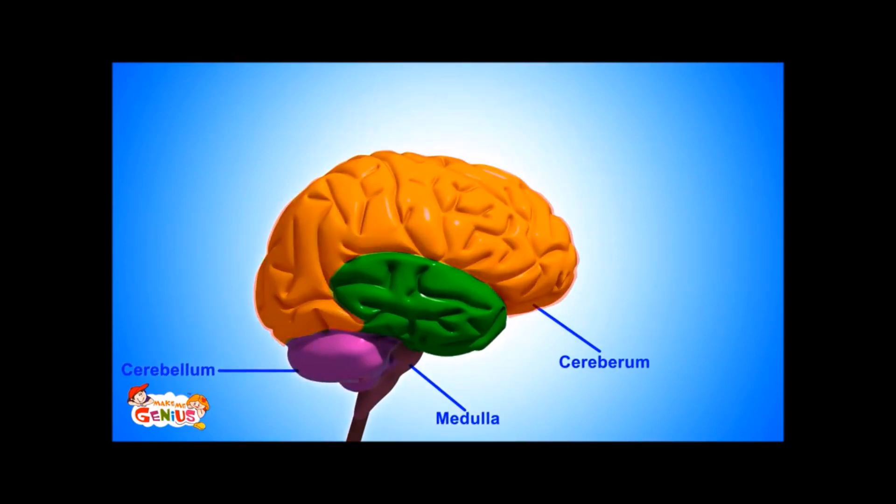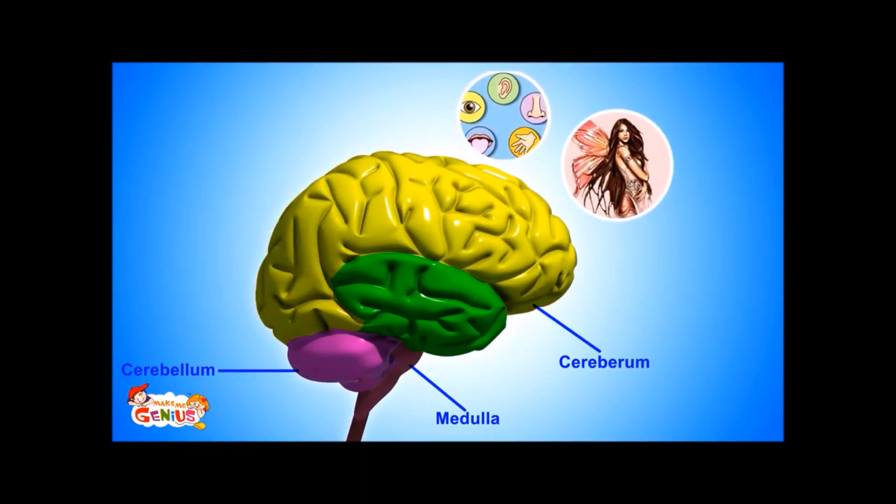The cerebrum is the biggest part of the brain. It controls our senses, our imagination, and our thoughts. So whatever we see, touch, taste, smell, think, or imagine is controlled by the cerebrum.